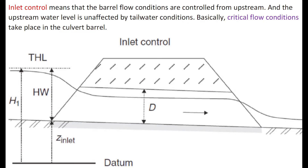Inlet control means that the barrel flow conditions are controlled from upstream and are unaffected by the tailwater condition. In this case, critical flow conditions take place in the culvert barrel.